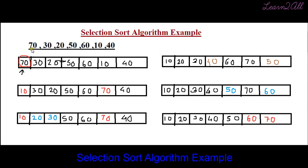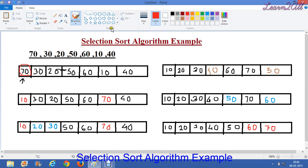Now let's see an example. Here in the example, the array contains: 70, 30, 20, 50, 60, 10, and 40.